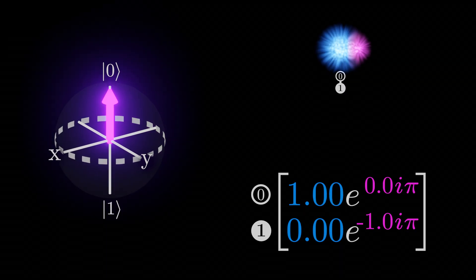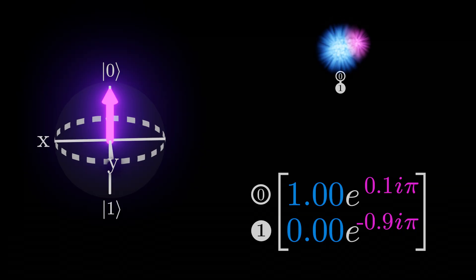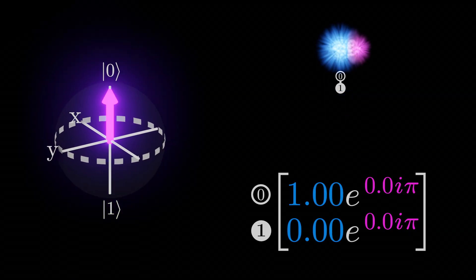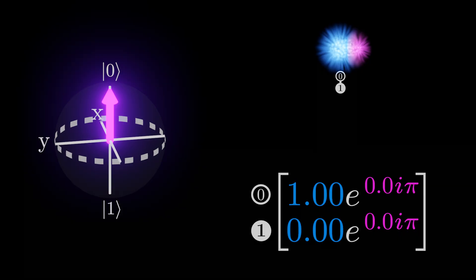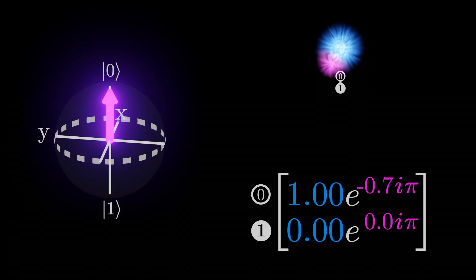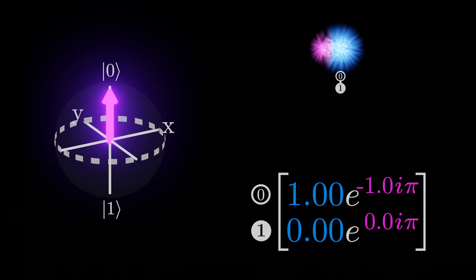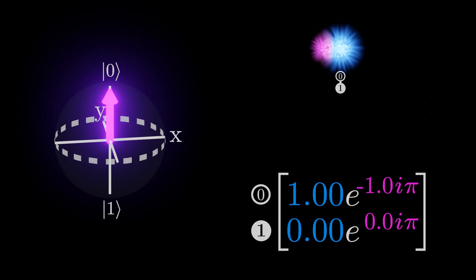When only one measurement is likely, the concept of a phase difference becomes meaningless, successfully encoding that there is only one state for each of these cases. Notice that there are still several different ways we can write down the state where 0 is the only likely measurement. This is why it's important to emphasize that it's the difference between the phases that matters.